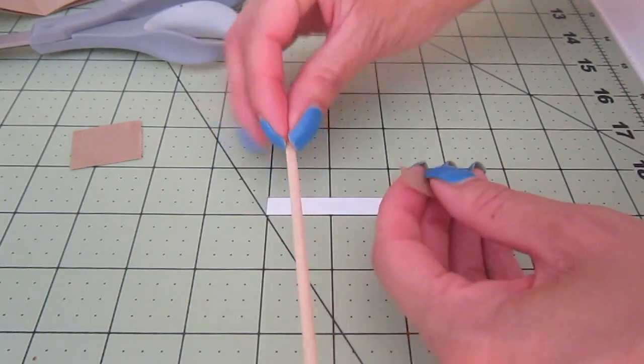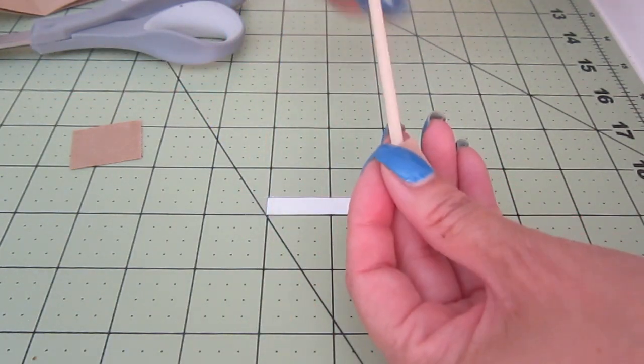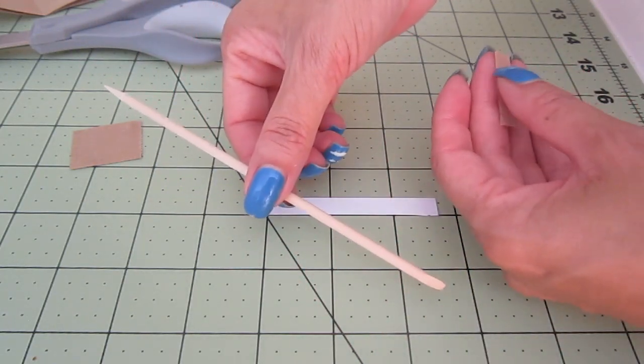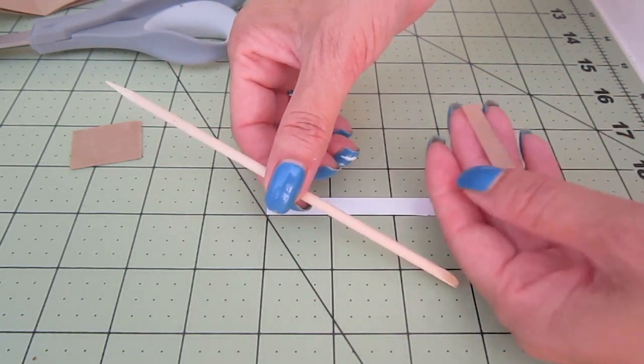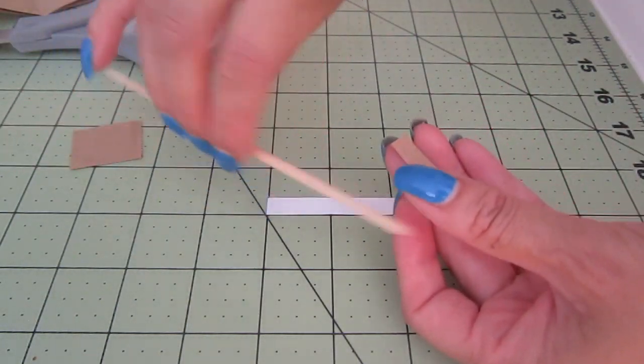And this is where we use our orange stick. These are used for working on your nails. But I chose to use it because it gives me the perfect diameter of the center of the toilet paper.